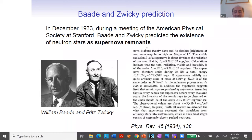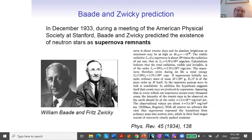Baade and Zwicky made this prediction that neutron stars could be the end product of supernova explosions. They really connected these two ideas, and that was the moment in which neutron stars became something concrete. The earlier discussion had already opened the possibility of having extremely compact objects made essentially only of neutrons, but there was no idea how that type of object could be produced. It was with this paper that the idea they could really be produced in a supernova explosion was introduced.